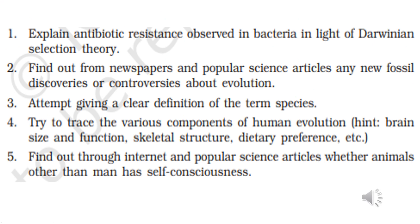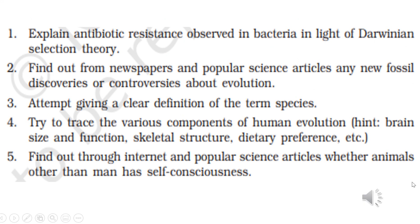First question: explain antibiotic resistance observed in bacteria in light of Darwinian selection theory. When a bacterial population faces a particular antibiotic which is sensitive to it, they die. Few bacteria having mutations which make them resistant to the antibiotic can survive. Such resistant bacteria multiply quickly because the competing bacteria have died and the entire population becomes resistant.